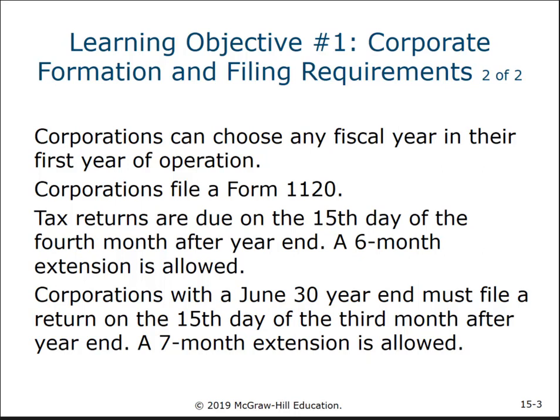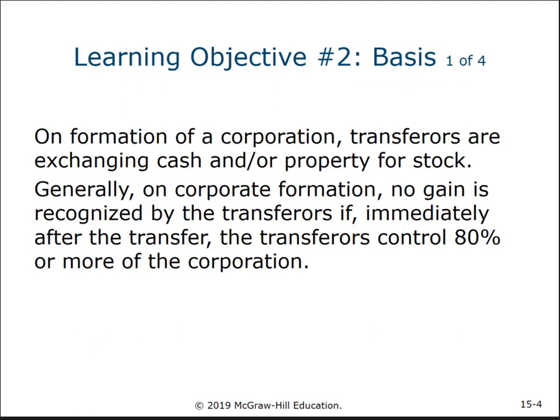That's different from partnerships. There's also a quirky rule: if you use June 30th as your fiscal year end, you only have until the third month instead of the fourth month to file, but then you get a seven-month extension to make up for it. It's an unusual rule but that's how it works.